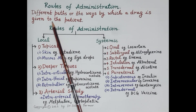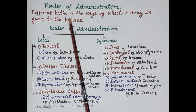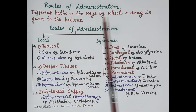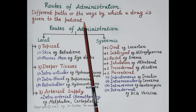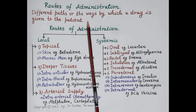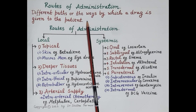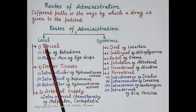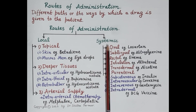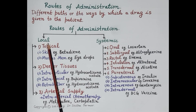Routes of administration are the different paths or the different ways by which a drug is given to a patient. There are two main routes of administration of drugs: the local routes and the systemic routes.